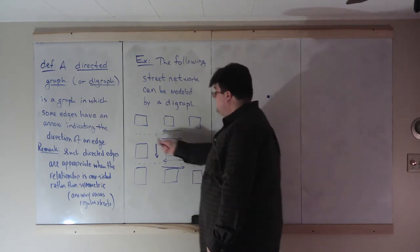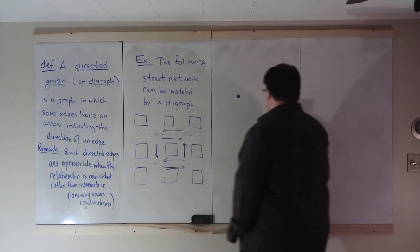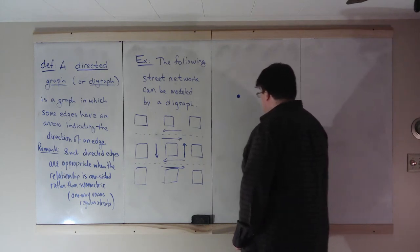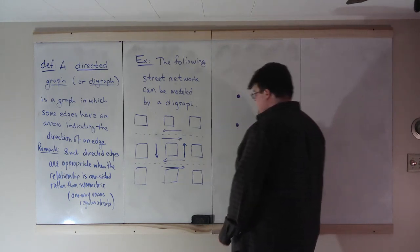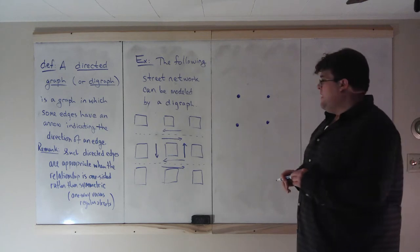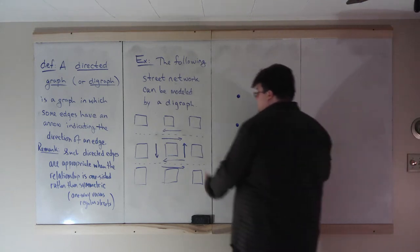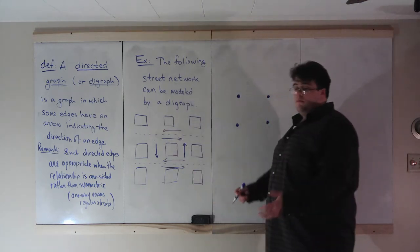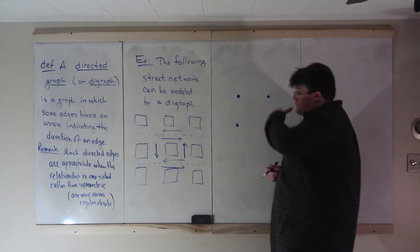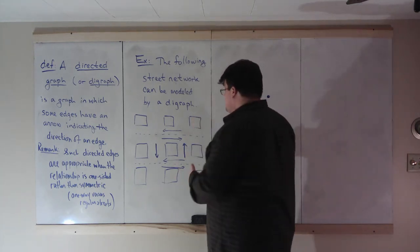So let's model this with a graph. So we have these four intersections of these roads. One type of application that this could arise is if you're looking to plow the roads of snow. Like right now we have 15 inches of snow outside.